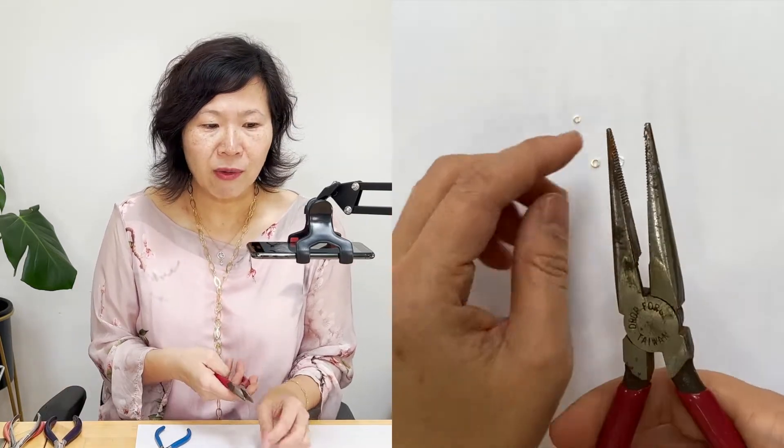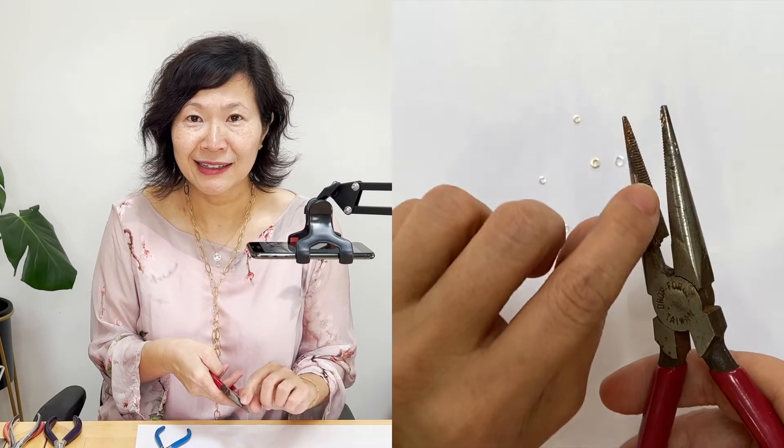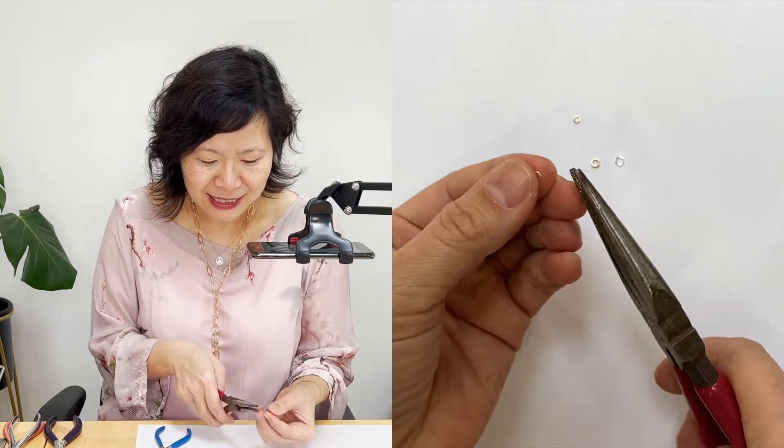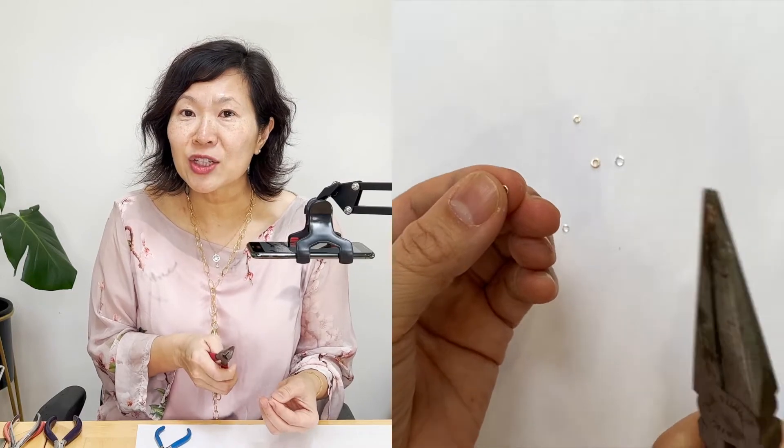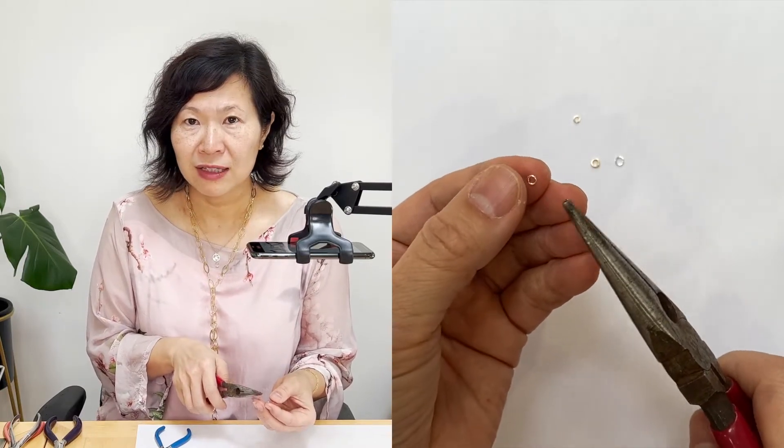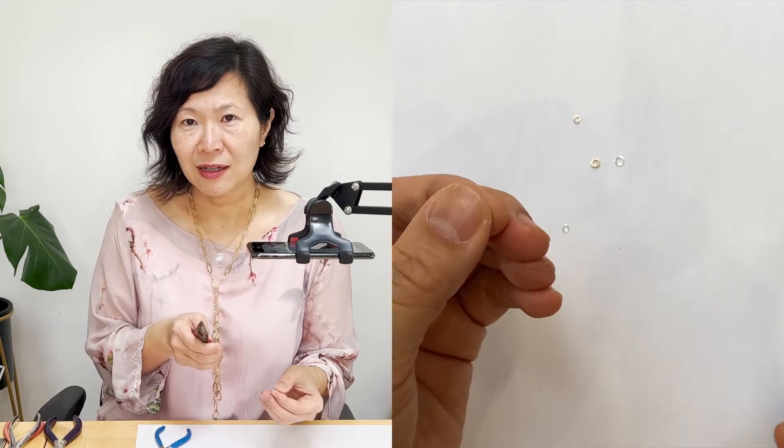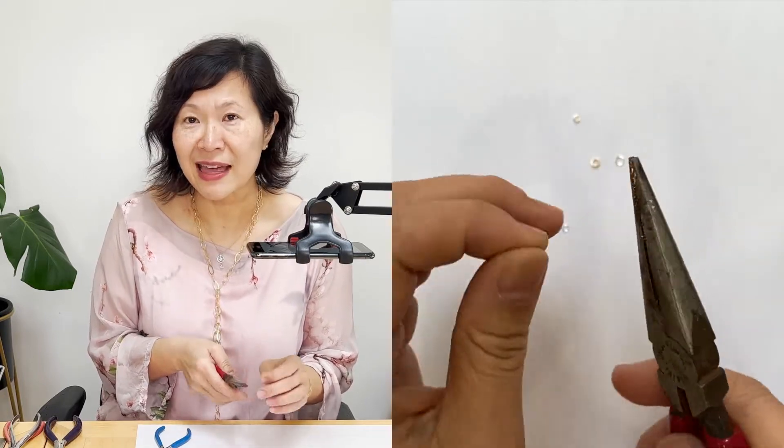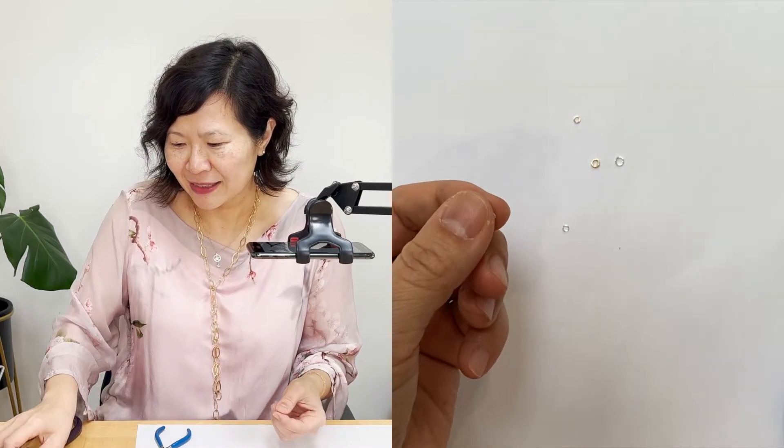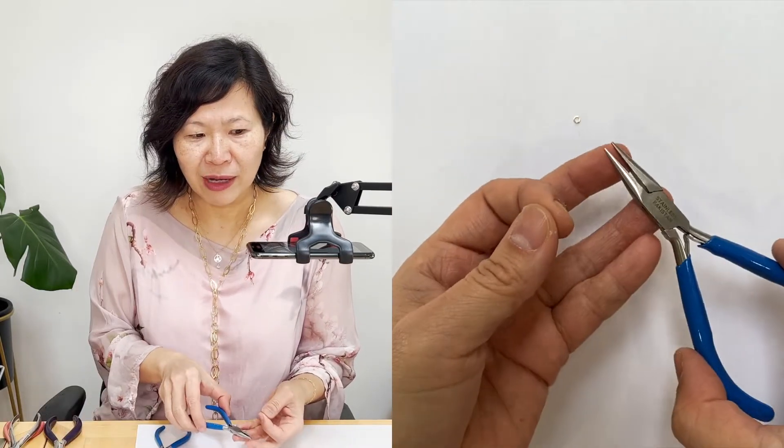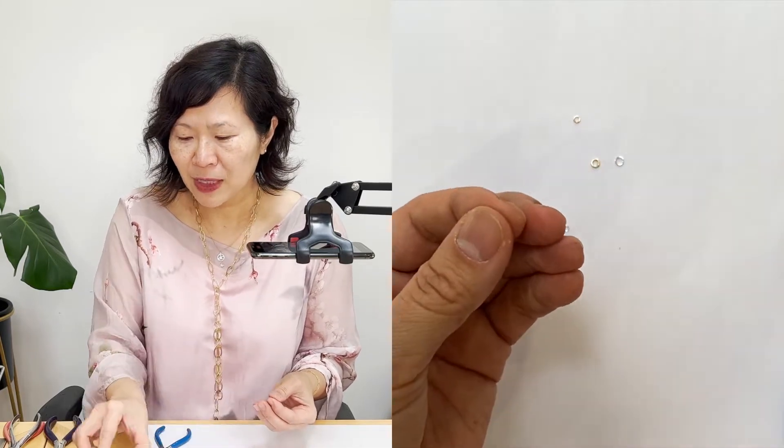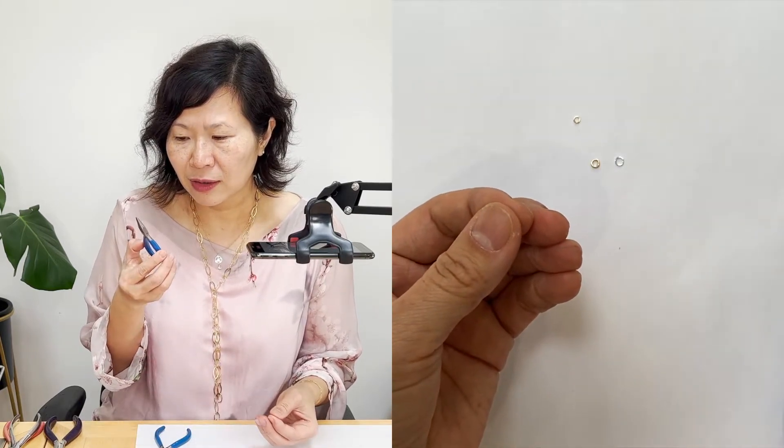You never want a serrated, the teeth, because when you are gripping the jump ring, it's going to leave a mark. It's not good. Some people think that they need that because it just grips it. You don't need that. And in fact, with a regular pair of chain nose pliers, there's enough grip and power if they're not too large.